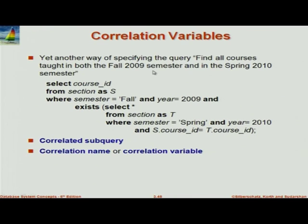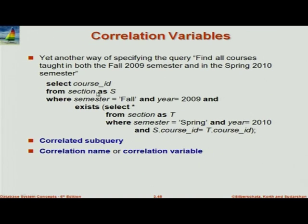Select course ID from section — maybe I should have had a distinct — where semester is fall, year 2009. And this time, what I've done is EXISTS: select star from section ST. Note I've used an alias 'AS' because I'm going to use this outer relation in the inner one. Section SS in the outer, and in the subquery, section ST where semester is spring and year 2010. Semester applies to the closest lexically occurring relation. Because of the scoping rules, semester will apply to this section.